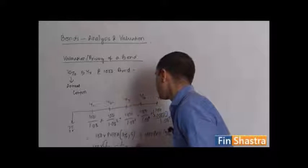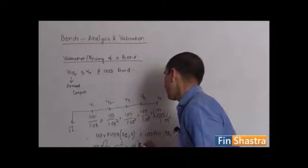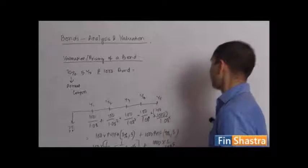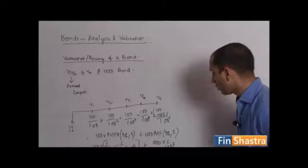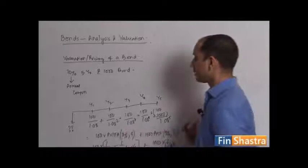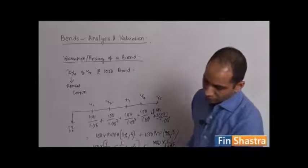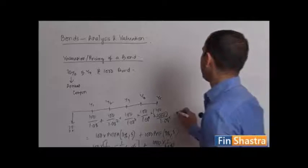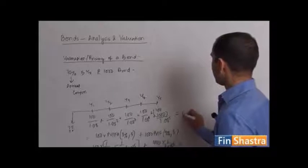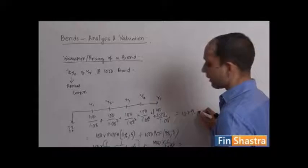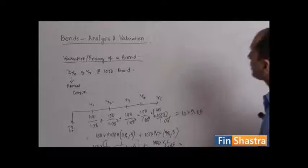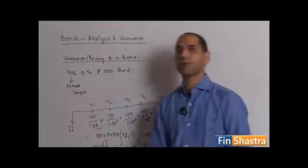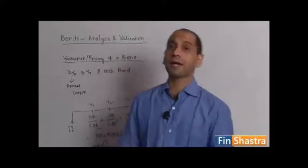1.08 into 1.08 to the power 5, plus 1000 into 1 by 1.08 to the power 5. That's how you arrive at the present value of all these cash flows. It turns out to be 1079.85. So this is the fair value of the bond as per your calculation when you are taking the discount rate to be eight percent.